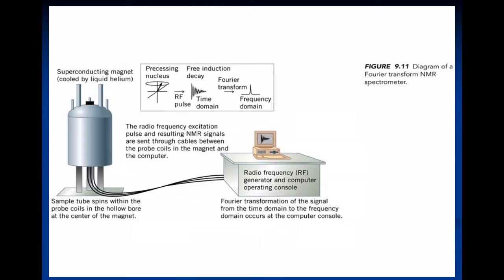Inside the can is the superconducting magnet, which must be at really low temperature. So we immerse it in liquid helium — as close to absolute zero as we can get, a couple of degrees above. When you place a material in something that cold, it becomes superconducting, meaning resistance essentially goes away and you can get huge magnetic fields. Because liquid helium is expensive and evaporates quickly, there's an outer can holding liquid nitrogen — much colder than room temperature — acting as a blanket to protect the liquid helium.